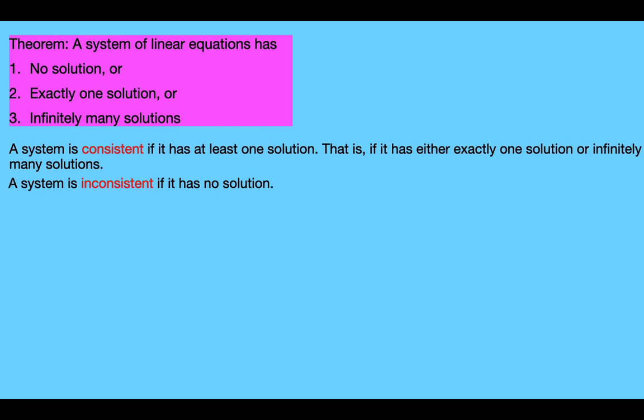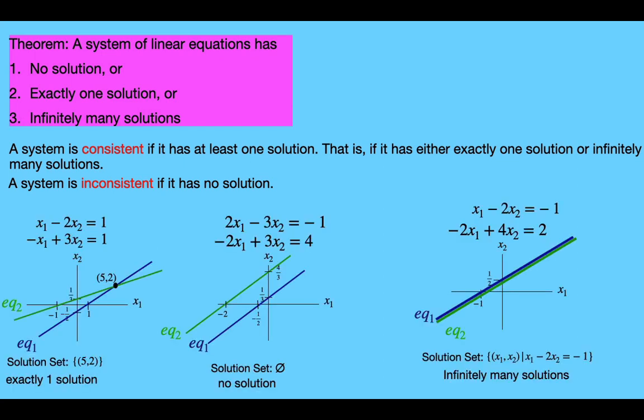We say that a system is consistent if it has at least one solution — that is, if it has either exactly one solution or infinitely many solutions. We say a system is inconsistent if it has no solution.